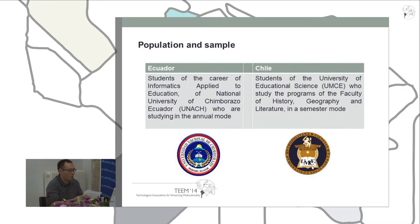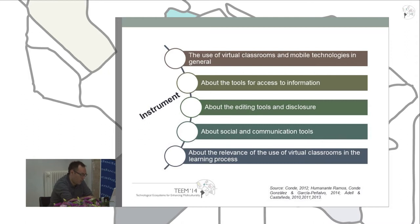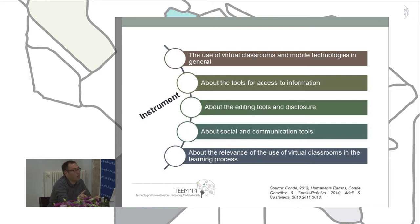The instrument used in this work was a survey prepared as a form and divided into five dimensions defined by previous theoretical conditions. The five dimensions are: the use of virtual classroom and mobile technologies in general; tools for access to information; editing and publication tools; social and communication tools; and the relevance of the use of virtual classroom in the learning process.